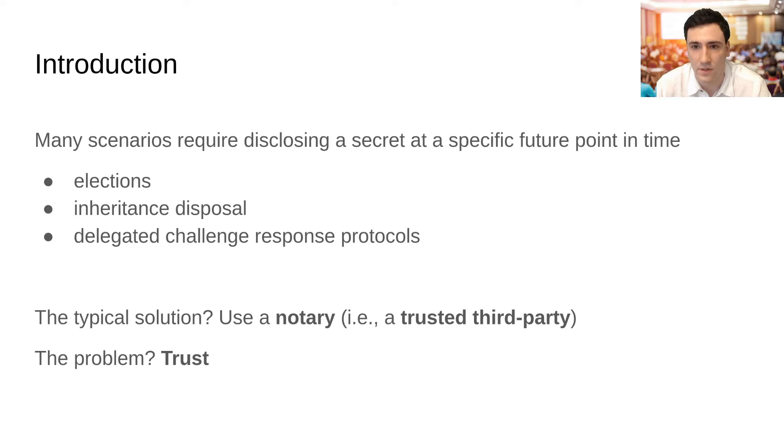Many real-world scenarios require disclosing a secret at a specific future time. For instance, this happens when we vote for elections or when we dispose our inheritance by will. In these circumstances we typically entrust a notary to keep a secret private until a future time, and then publish it so that we are no longer needed for disclosure to happen.